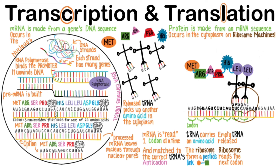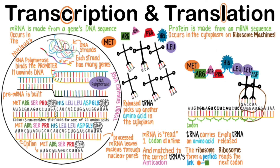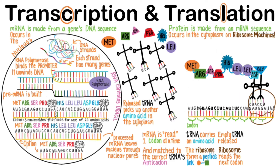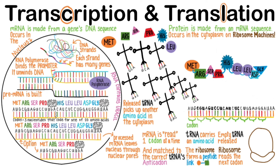The ribosome forms a covalent bond between the two leucines and then reads the next codon, which calls for aspartic acid. Aspartic acid's arrival ejects the tRNA that brought leucine, which then looks to bind another leucine. The peptide bond forms, the next codon is read, and glycine is brought to the growing peptide chain. The tRNA that brought that second leucine is ejected, the last peptide link is formed between aspartic acid and glycine, and the stop codon is reached. This causes the ribosome to release its hold on the remaining tRNAs and the mRNA transcript. The tRNAs can go find new amino acids, and the mRNA can actually be translated again by another ribosome. Eventually it will degrade, but it can be used many times to make the same protein.